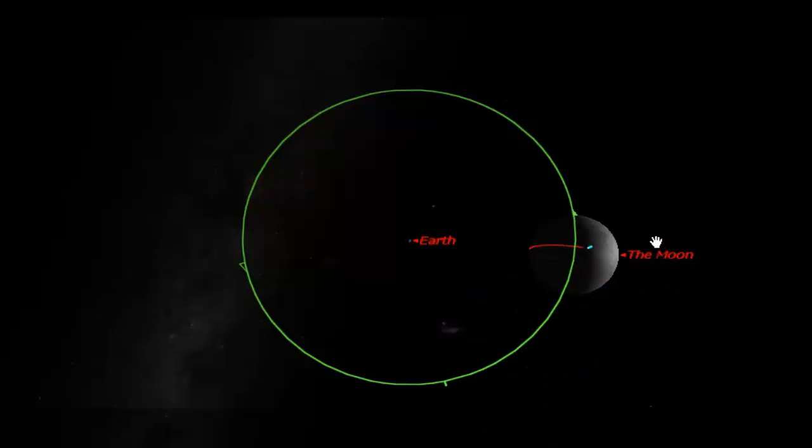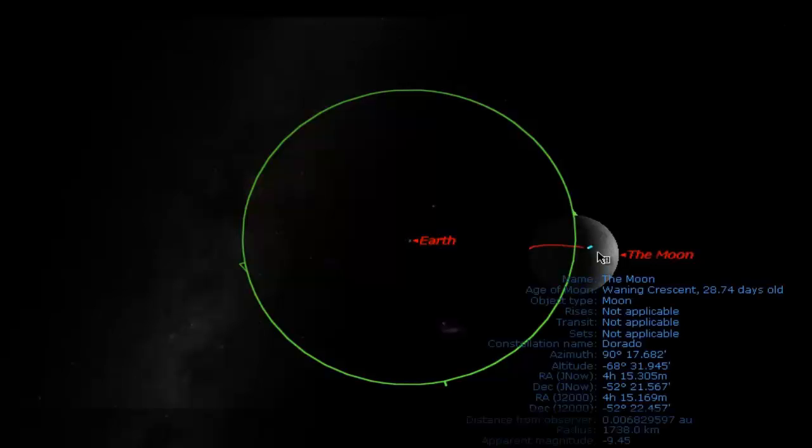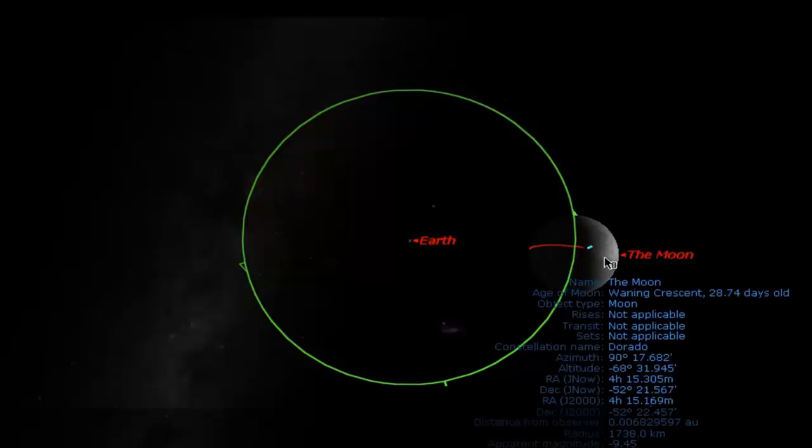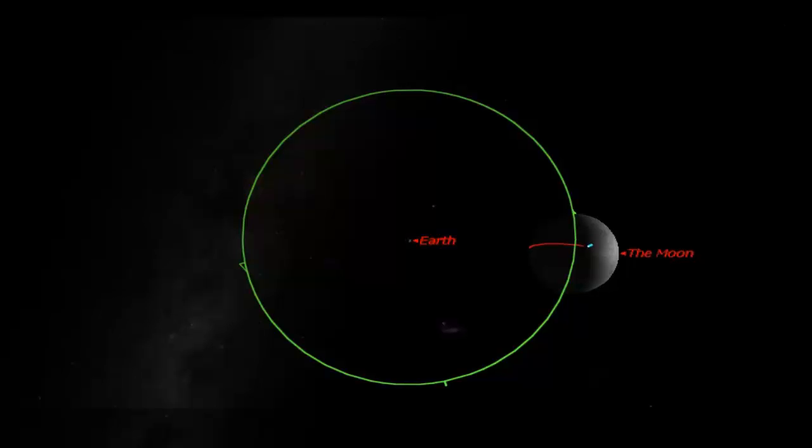Now if the moon didn't rotate, what we should see as I progress through the month or so is this red line should always face to the left because the moon wouldn't rotate. That line would never be facing anywhere else. If it does rotate though, this is going to change orientation. So let's go ahead and hit play.